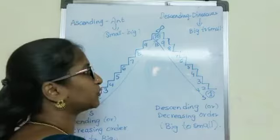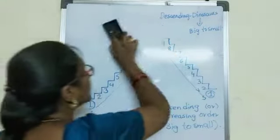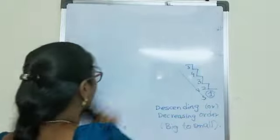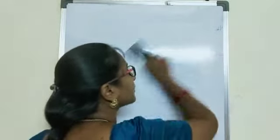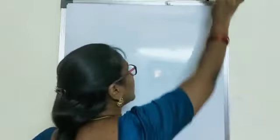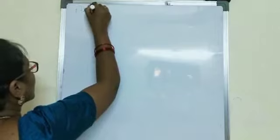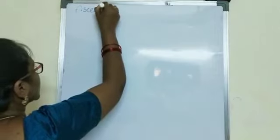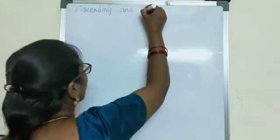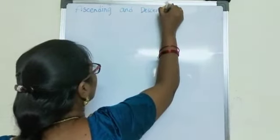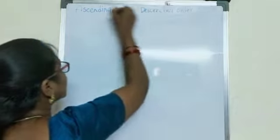Hope you all understood what I am going to teach you today. Today I am going to teach you ascending and descending order. It is also known as increasing order or decreasing order. Ascending and descending order — let me take some examples to teach you.